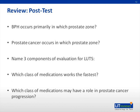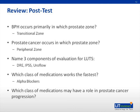To review: BPH occurs primarily in which zone of the prostate? The transitional zone. Prostate cancer occurs in which zone? The peripheral zone. Three components for an evaluation of a male with lower urinary tract symptoms include digital rectal examination, International Prostate Symptom Score, and a urinalysis. Which class of medications for BPH works the fastest? Alpha blockers. Which class of medication actually decreases the size of the prostate? 5-alpha reductase inhibitors.